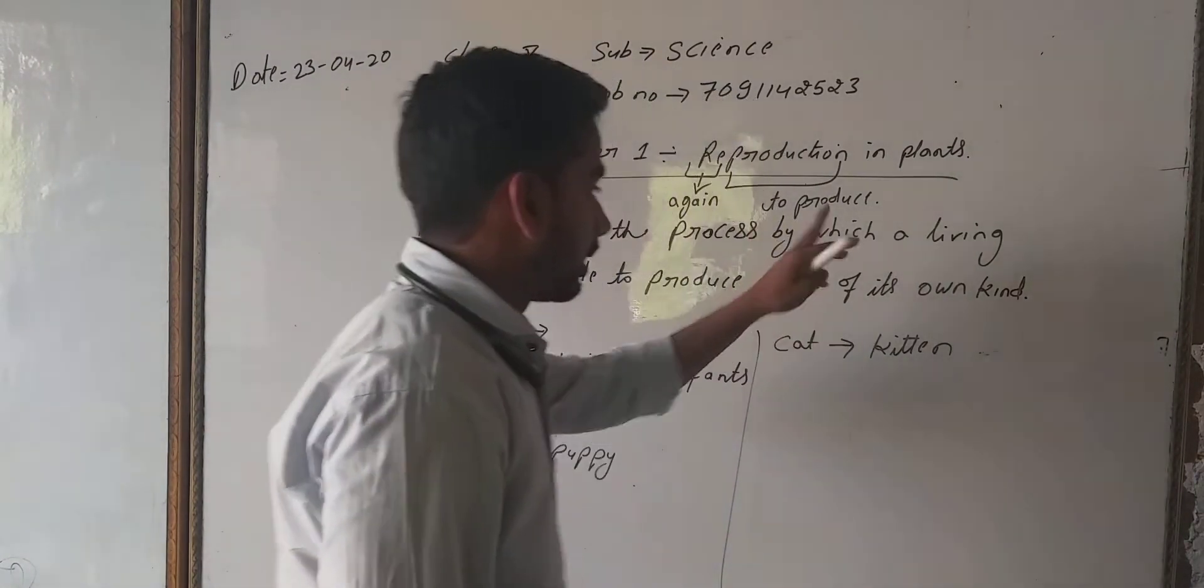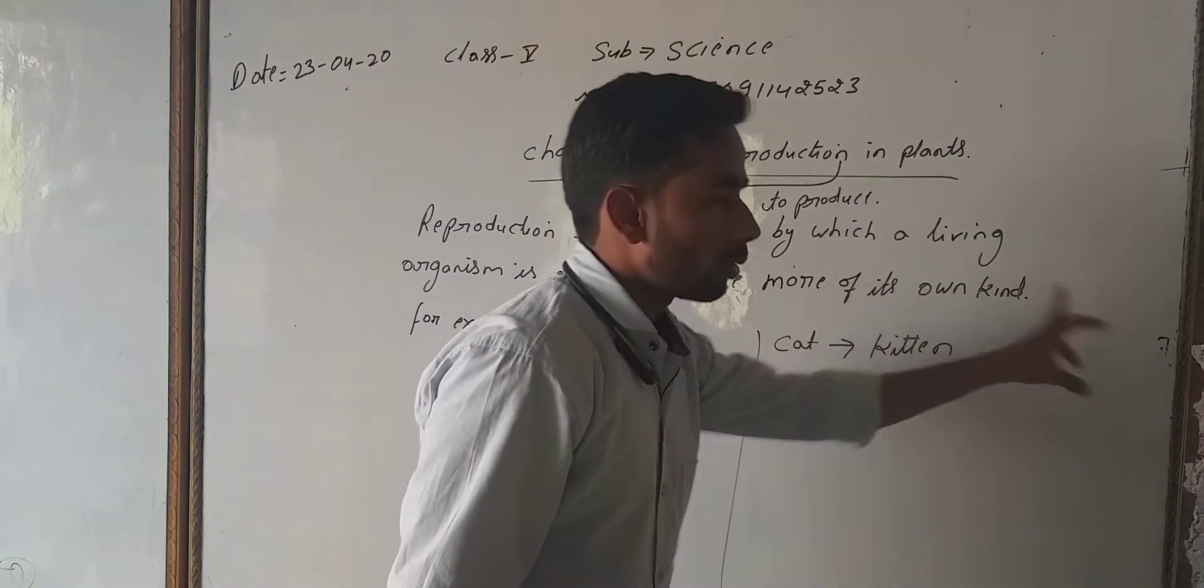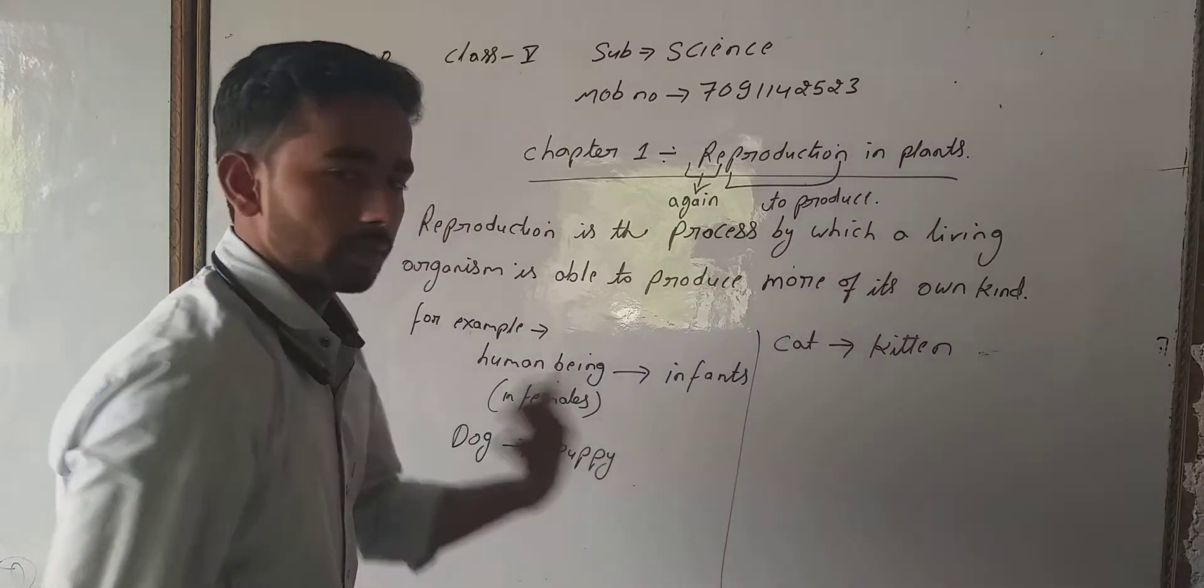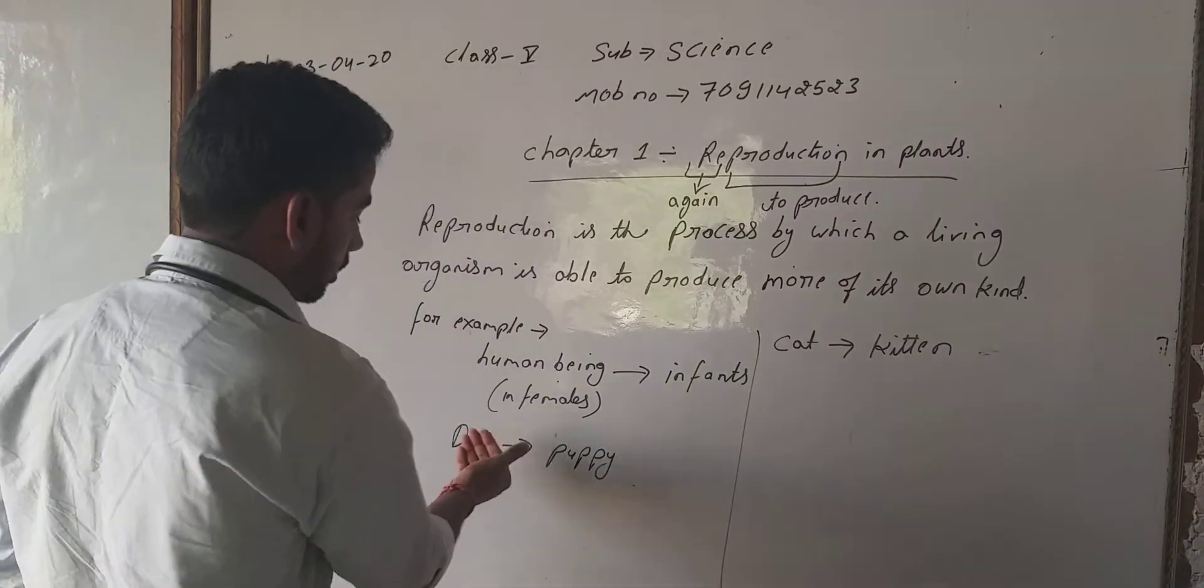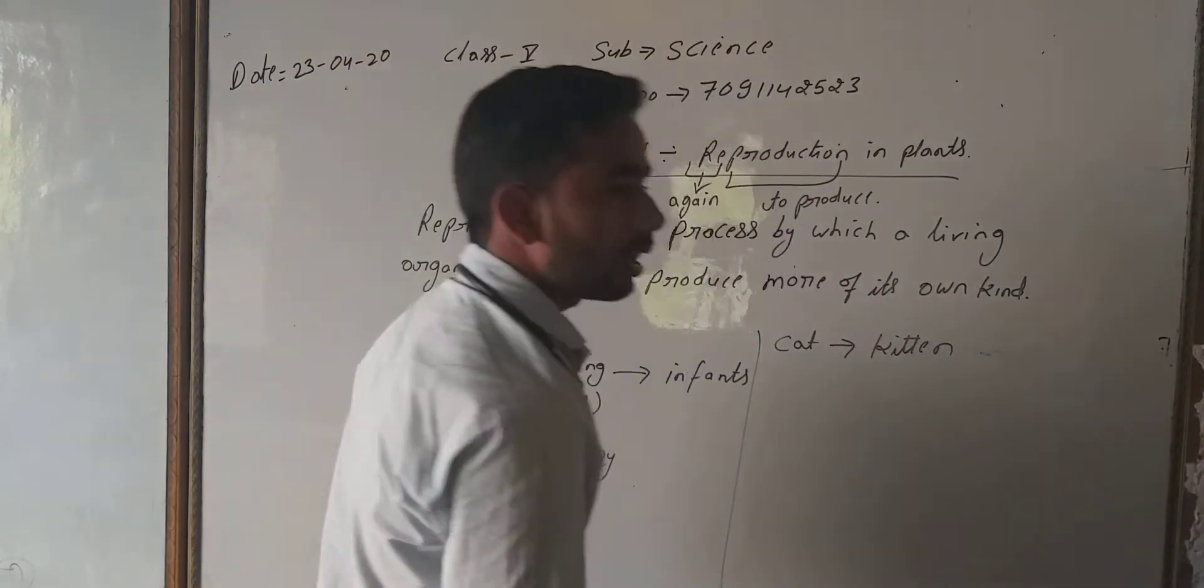Take a closer look at the definition. 'More of its own kind' means human beings can produce human beings only, a dog can produce a dog only, or a cat can produce a cat only.